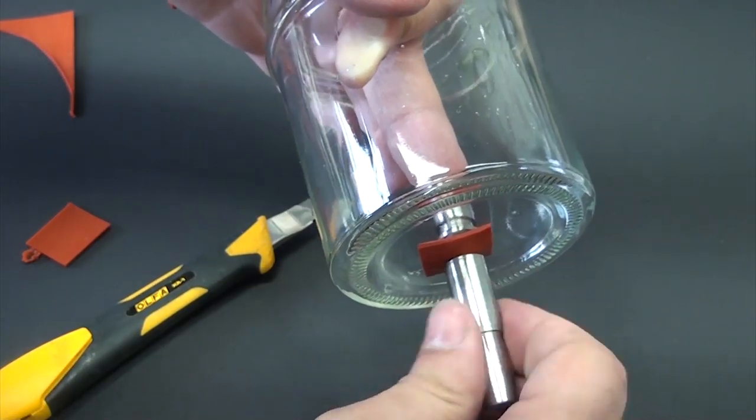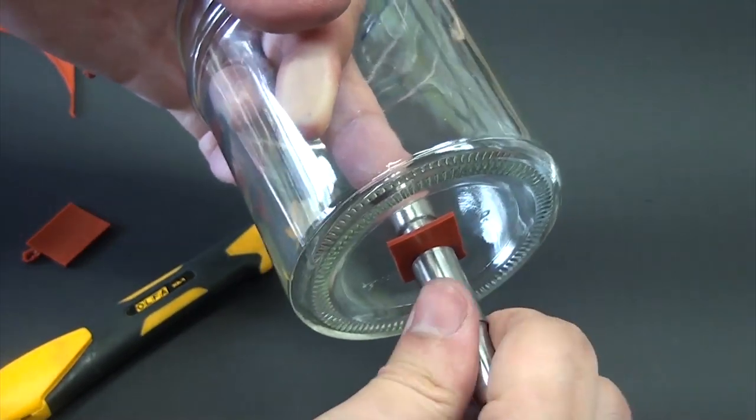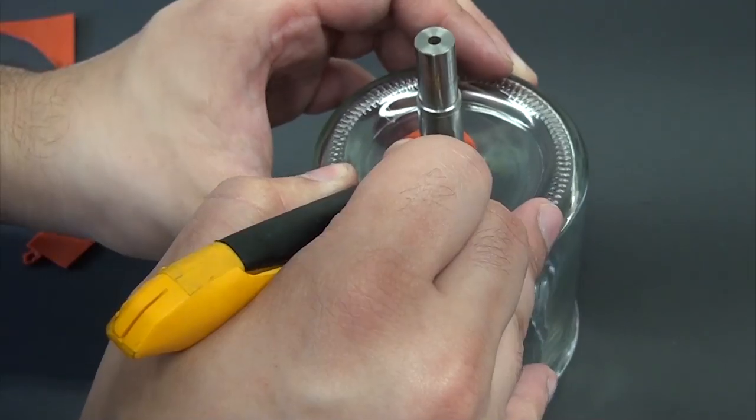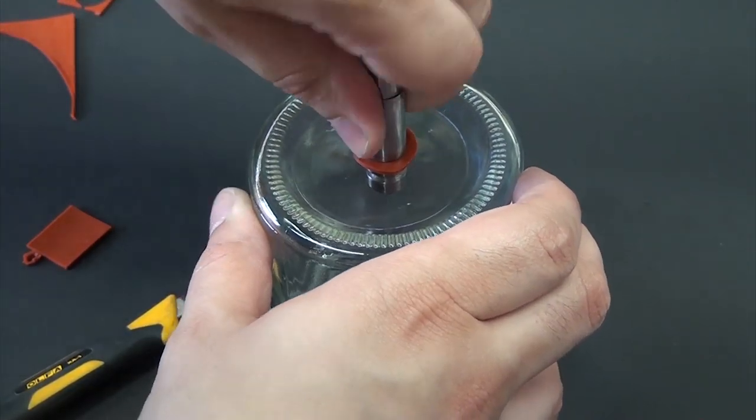After that, clean the jar and we can mount the feed through. It's really simple. I just cut another small piece of gasket with a hole in the middle and sandwiched it between the outer glass and outer piece of the feed through. Screwing the two pieces together makes a tight seal as it compresses onto the gasket.